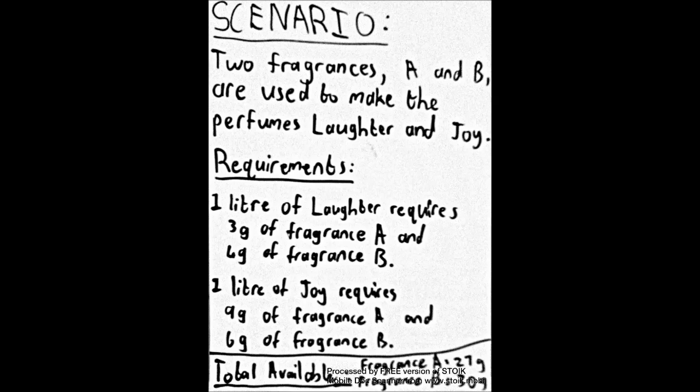Let's look at an example. Here we have a scenario that says two fragrances A and B are used to make the perfumes laughter and joy. Requirements: One liter of laughter requires three grams of fragrance A and four grams of fragrance B. One liter of joy requires nine grams of fragrance A and six grams of fragrance B. I want to say the company has decided that at least three liters of laughter has to be produced every week. The total amounts available of fragrance A and B per week are 27 and 30 grams respectively.